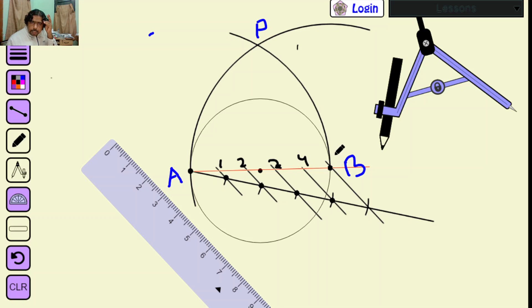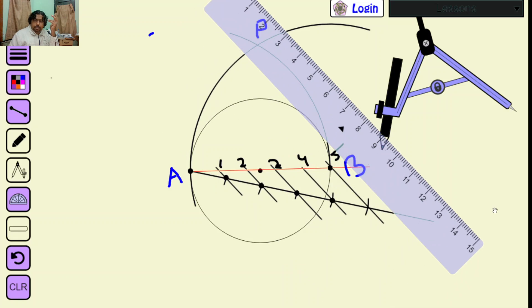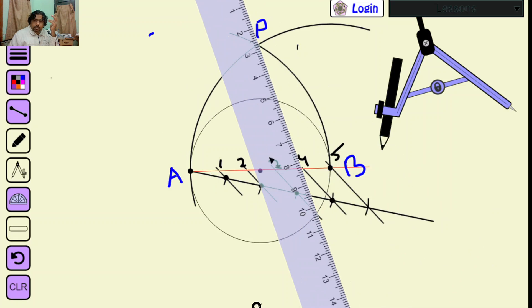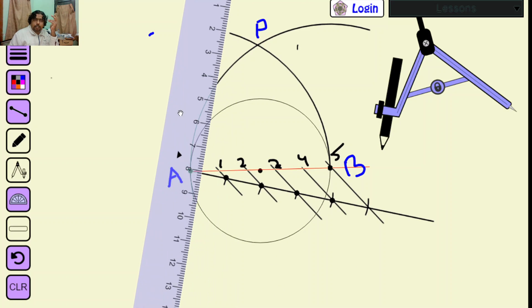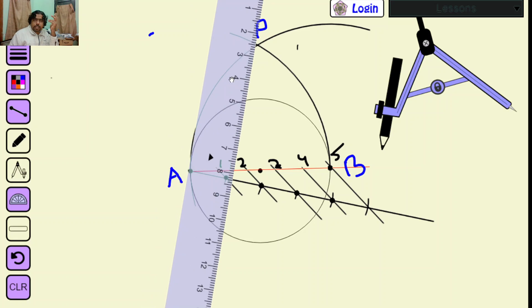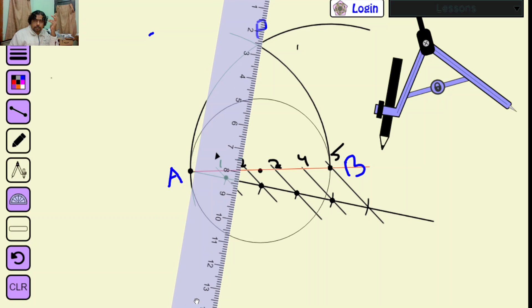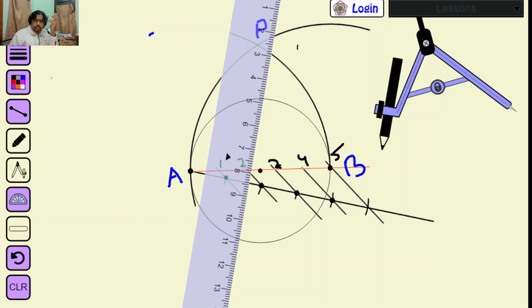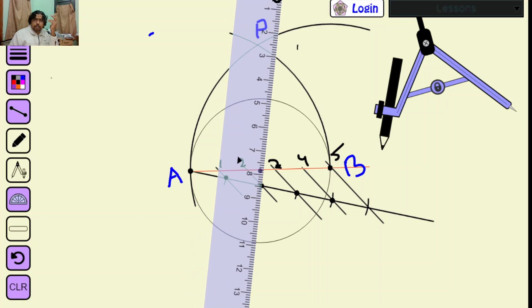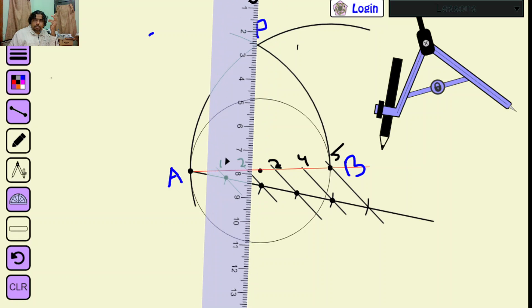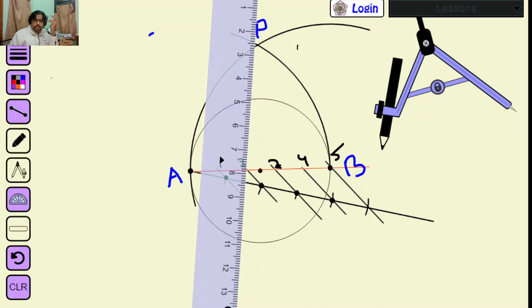This will be number one, number two, then number three and number four. Now connect point P and point 2 and extend it up to the circle and see where it is intercepting. Everything will depend on this perfection.